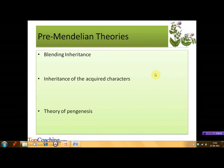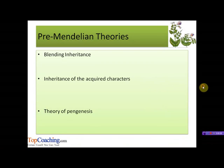The second theory was the inheritance of acquired characters, also known as the theory of adaptation or Lamarckism. It was proposed by French scientist Jean-Baptiste Lamarck, based on the ideas of Hippocrates and Aristotle. It consists of two parts. The first part is the theory of use and disuse, according to which those body parts of an organism used more often become stronger and larger, whereas those not used slowly degenerate and eventually disappear.